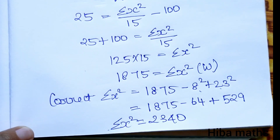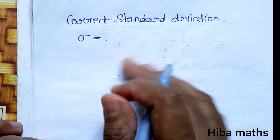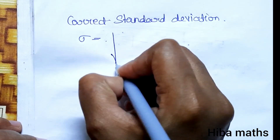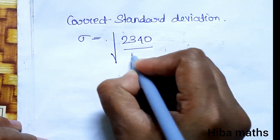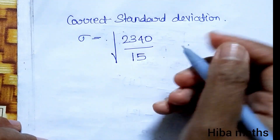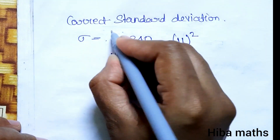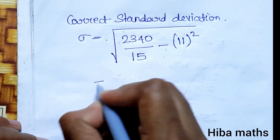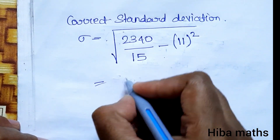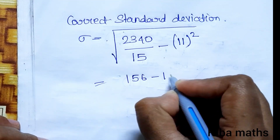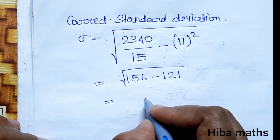Now we calculate the correct standard deviation. Standard deviation equals the square root of: correct summation of x² divided by number of observations, minus correct mean squared. That is the square root of 2340 divided by 15, minus 11 squared. 2340 divided by 15 equals 156. Minus 11 squared, which is 121. So we get the square root of 35.